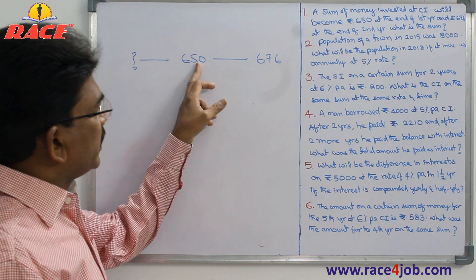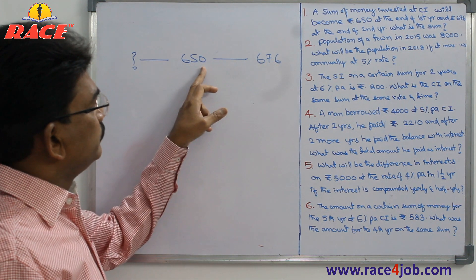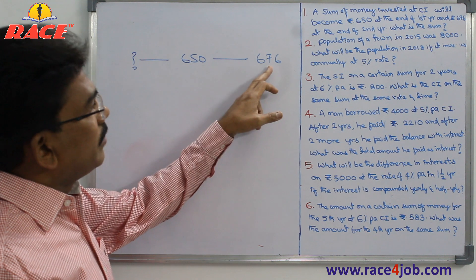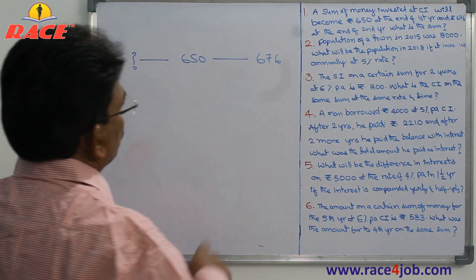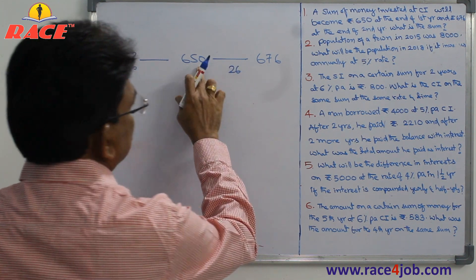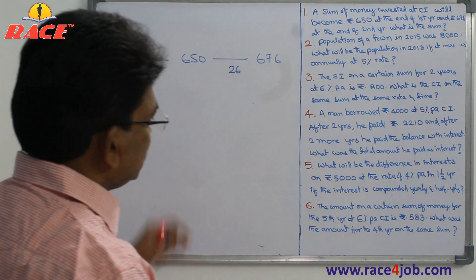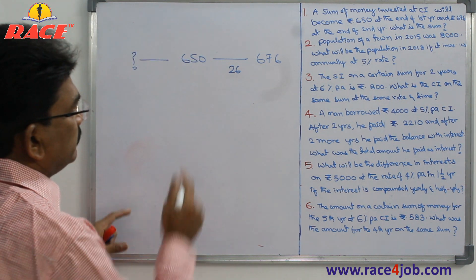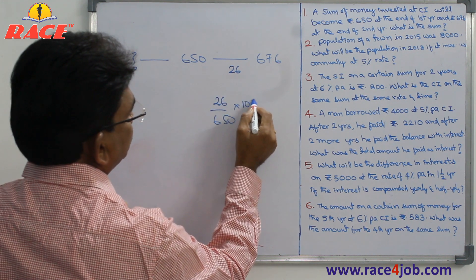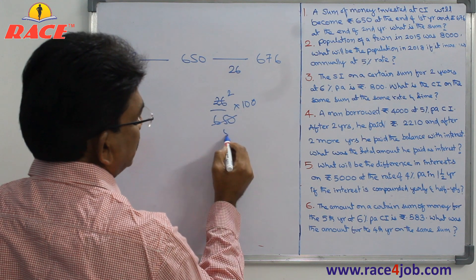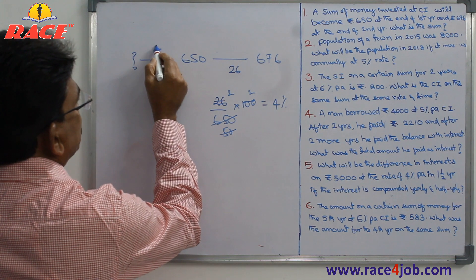The amount after 1 year becomes the principal for the 2nd year. So principal is 650 and amount is 676. How much interest did we get? 26 rupees interest on 650. This is what percentage? Rate of interest is interest as a percent of principal. So 26 on 650 is how much percent? That is 4%. So the rate of interest is 4%.